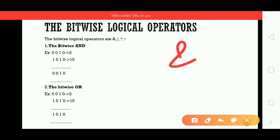See here, both the operands should be 1, then only it produces the result 1. Otherwise, in all other cases, it produces the result 0. This is about the bitwise AND operator.